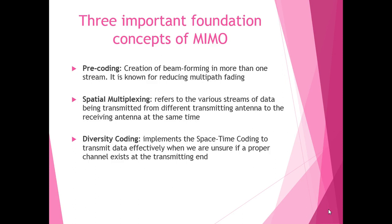Secondly, we have spatial multiplexing that refers to the various streams of data being transmitted from different transmitting antennas to the receivers at the same time.